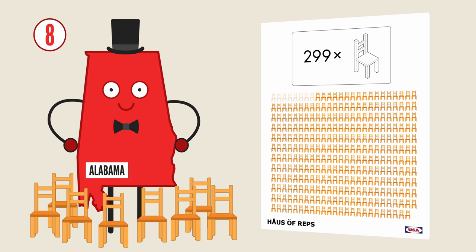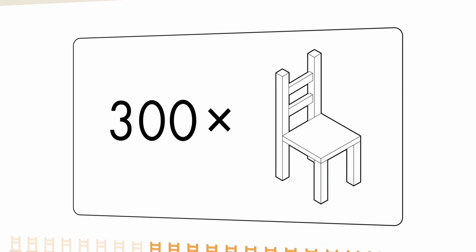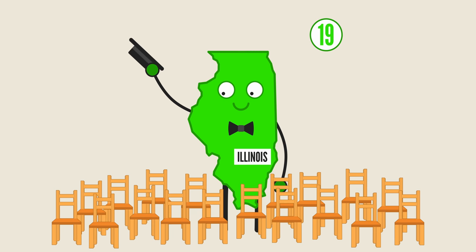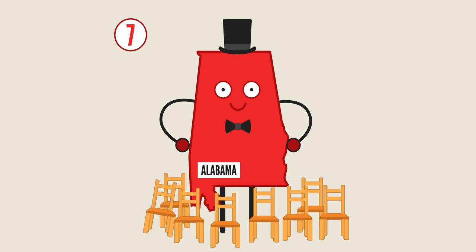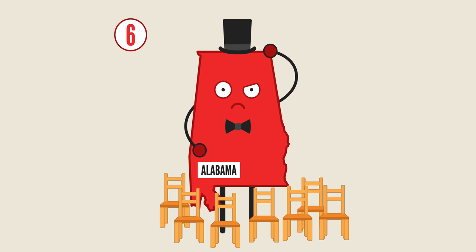Pretty good. But then imagine they decide to add one more seat to the House of Representatives — there are now 300 positions available. You see that extra seat wander over and join Illinois. That's pretty good, you think — I'm happy for them. But then one of your representatives just gets up, leaves, and goes to join Texas. What? What's going on?